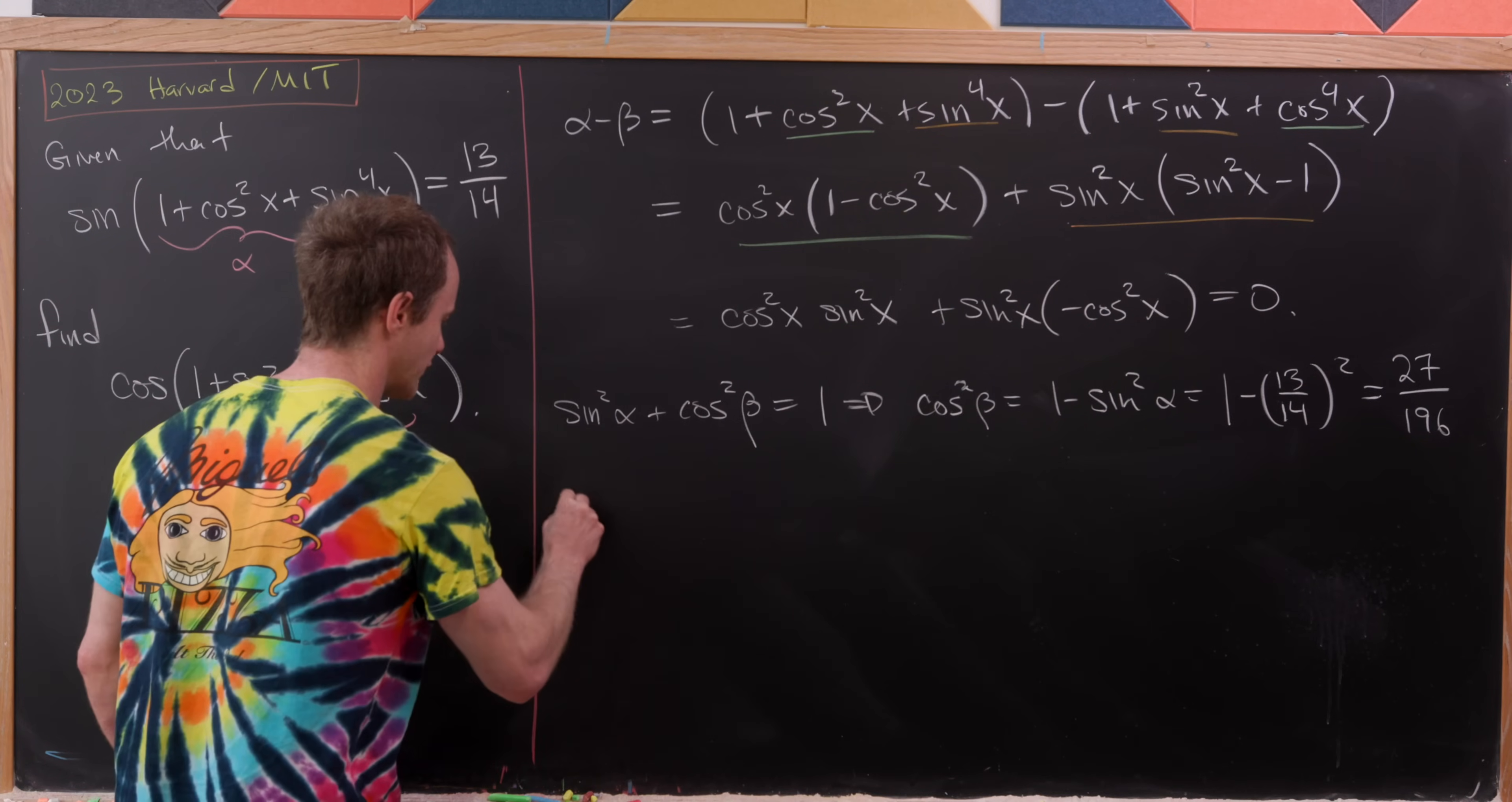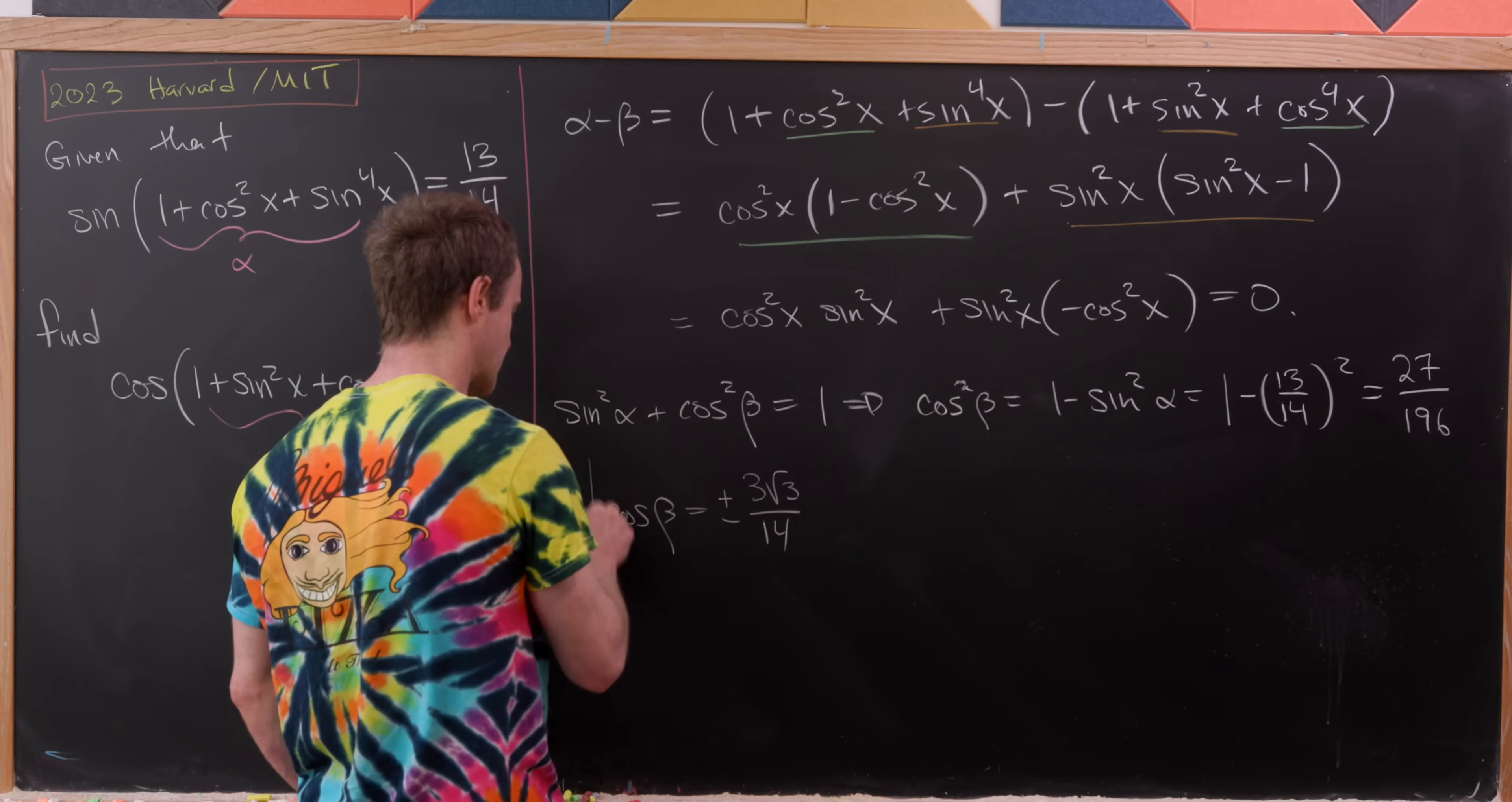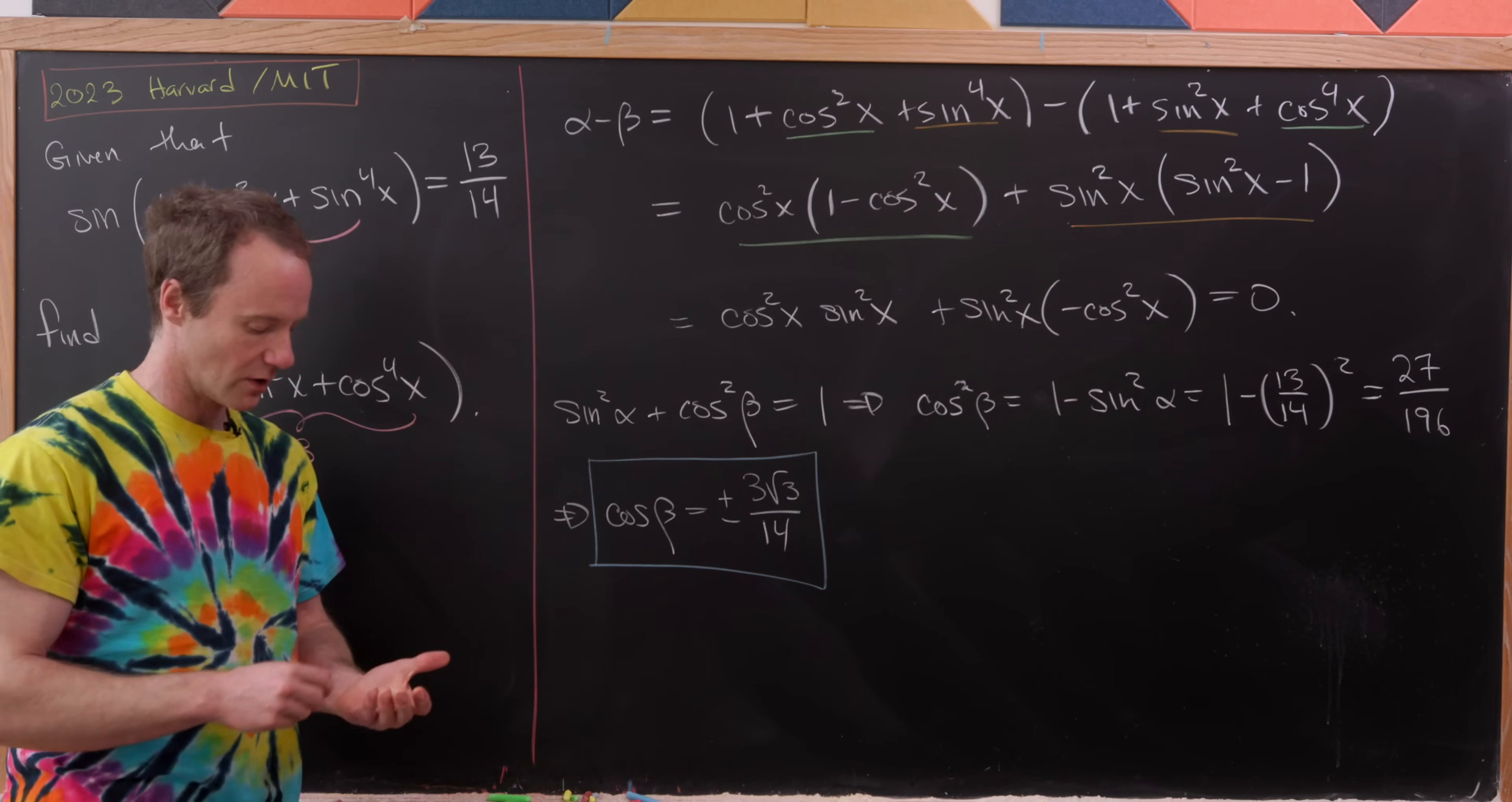Now taking the square root of both sides, we get two possibilities for cos(β). It's going to be either plus or minus 3√3/14. So there are our two possibilities. Now we just have to figure out which quadrant beta is in, and that'll tell us whether or not we have a positive or negative 3√3/14.